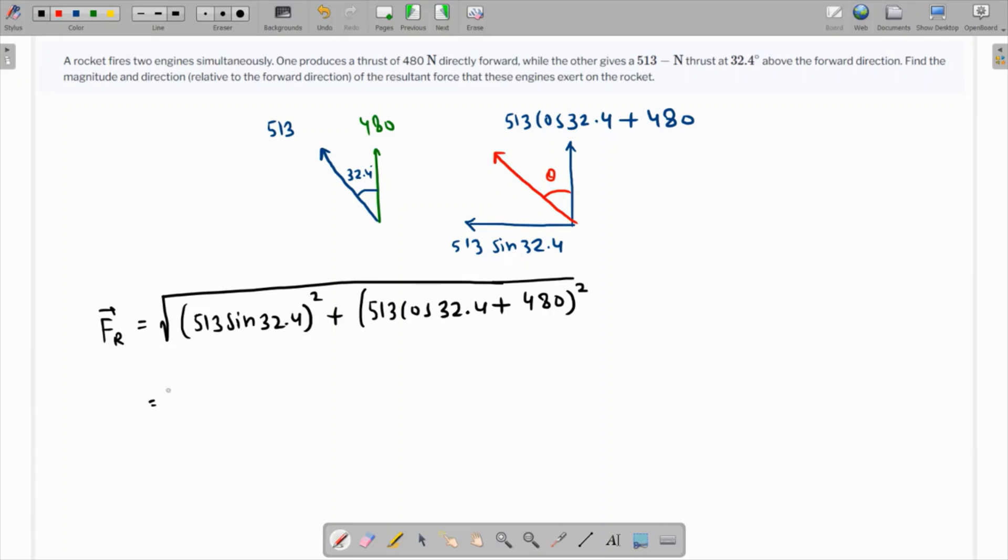Let me just grab my calculator and find this. So sine of 32.4 times 513 and square root of this, plus 513 times cos 32.4 plus 480 squared, and the square root of this is coming as 953.62.